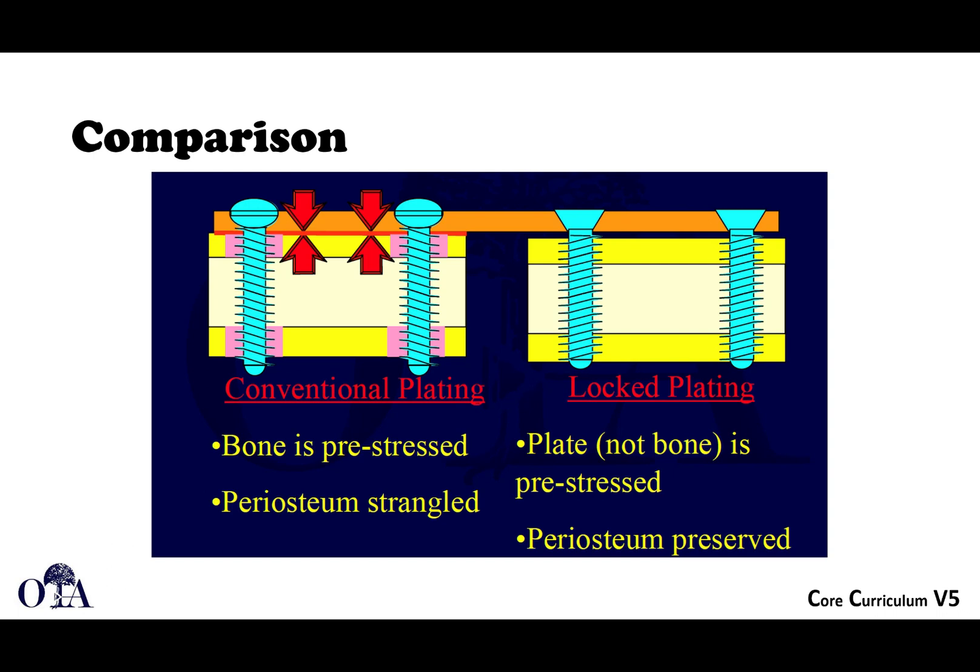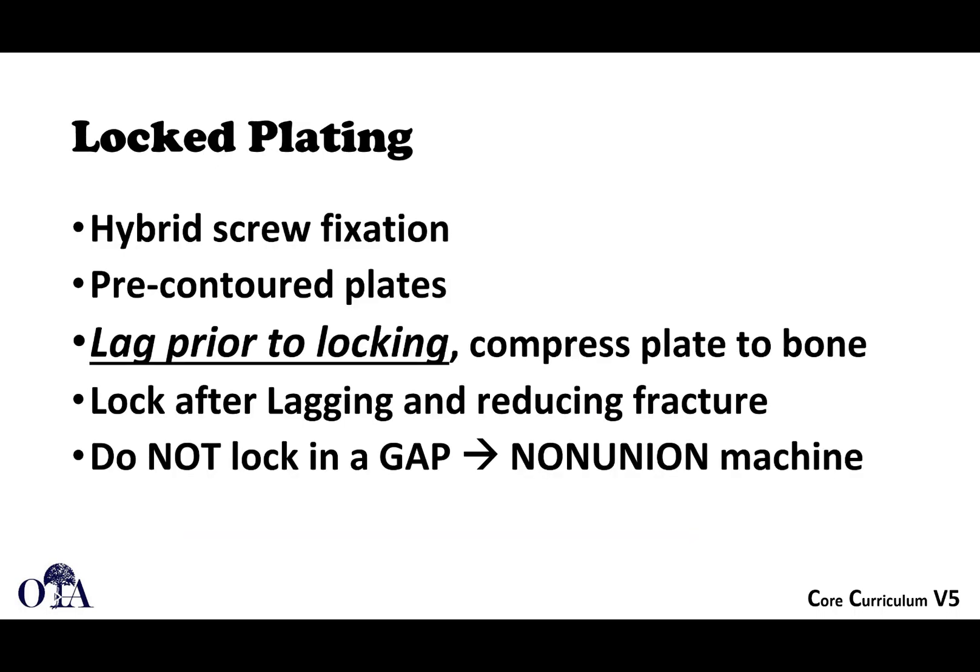With conventional screws, the plate is compressed to bone, the bone is pre-stressed, and the periosteum gets crushed. With locked plating, the plate — not the bone — is pre-stressed, and the periosteum is preserved. Many locked plates are also pre-contoured. Key principles: lag before locking, and do not lock in a gap, as that is a recipe for non-union.